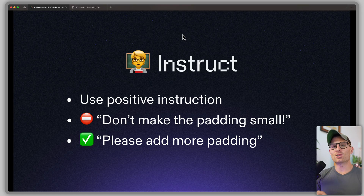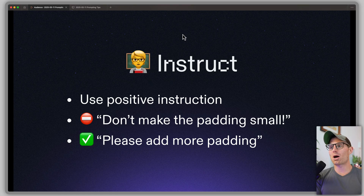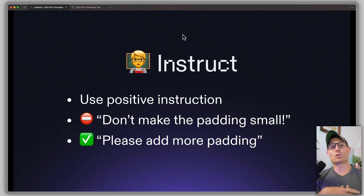Next tip: instruct. When you're talking to an AI, it's a lot like talking to a person. Use positive instruction — instead of saying 'don't make the padding small,' say 'please add more padding.' Instead of saying 'don't do this thing,' describe what you would like to see happen. This has been proven to result in better outcomes with LLMs.